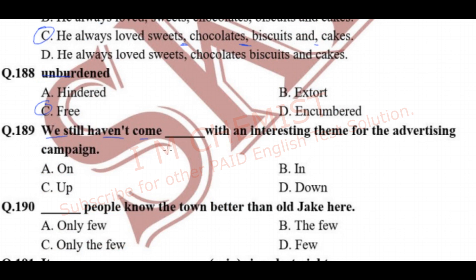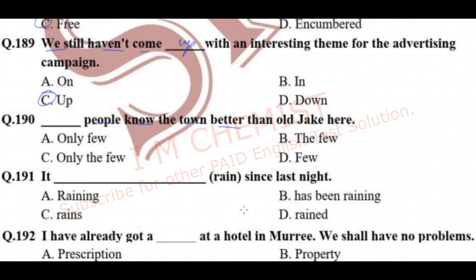Question number 189: 'We still haven't come up with an interesting theme for the advertising campaign.' We have to choose the correct preposition. The right answer is option C — 'up'. The correct phrase is 'come up with'.